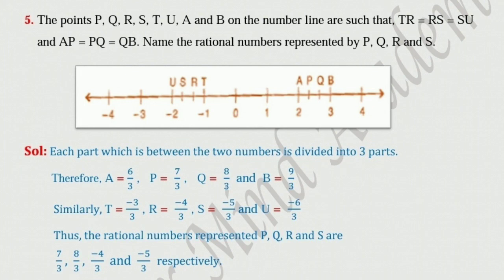Students, please see the diagram. Each part between the two numbers is divided into three parts. Therefore, A is equal to 6 upon 3. How 6 upon 3? That is 0 to 1 is 3 parts, 1 to 2 is again 3 parts, that is total 6 parts, that is 6 upon 3.